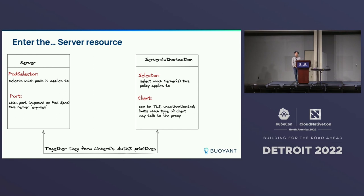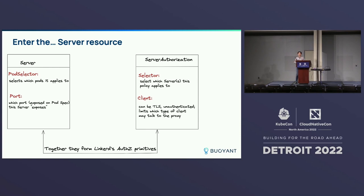We had to come up with a different resource to encapsulate the idea of a traffic receiver rather than a traffic target — putting authorization policy directly on the service backend, not the service frontend. So we came up with two new resources: Server and ServerAuthorization. The Server resource is very simple: it has a pod selector, which selects which pods this server refers to, and a port. Unlike a service, which can have many ports, a server is specifically about one single port. This defines very specifically a traffic receiver, so we can set authorization policy on that server.